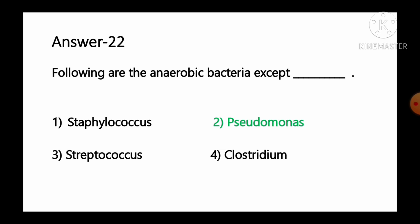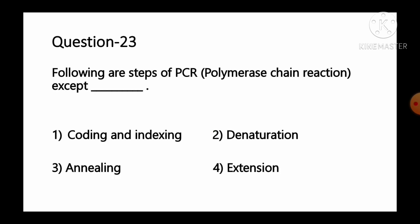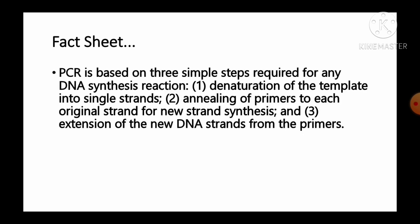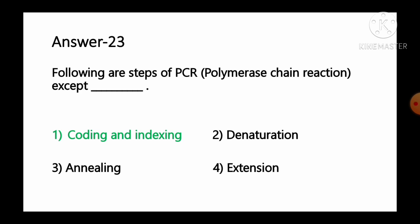Question number 23: Following are the steps of PCR (polymerase chain reaction) except — option 1 coding and induction, option 2 denaturation, option 3 annealing, option 4 extension. PCR is based on three steps: denaturation of template into single strands, annealing of primers to each original strand, and extension of the new DNA strands from the primers. So option number 1, coding and induction, is not a step of PCR and is the correct answer.